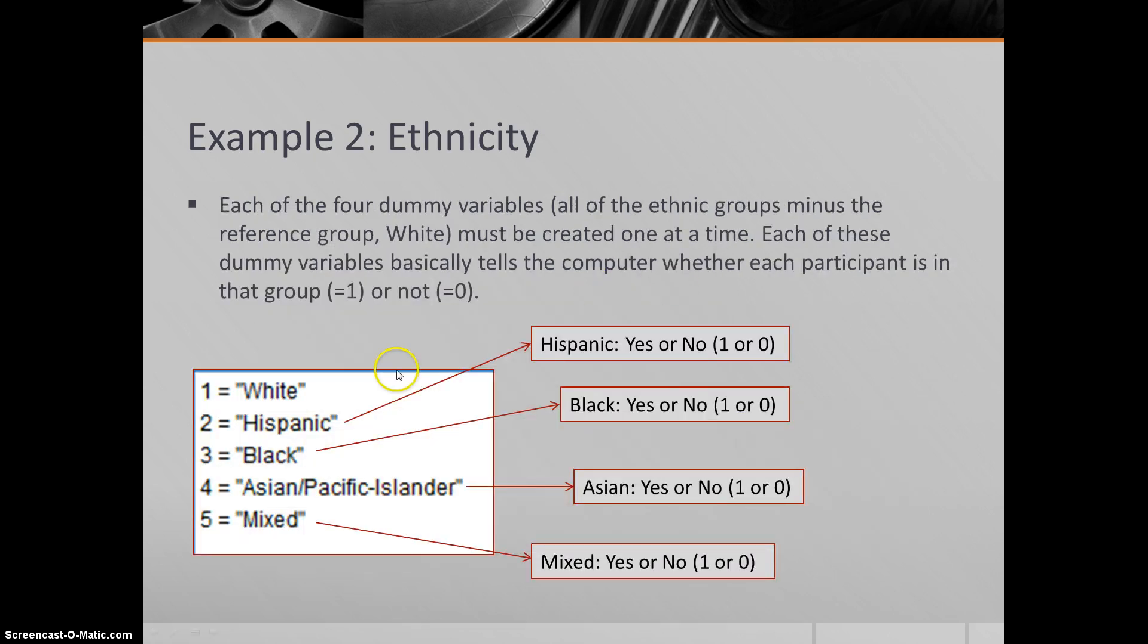Again, we have five groups, four new dummy variables. For each one of these, we're going to tell the computer whether each participant is in that group or not. Our first dummy variable will tell the computer whether the individual is Hispanic or not. If they are, they get a 1. If they're not, they get a 0. Next one tells the computer whether the participant is black or not—yes or no, 1 or 0—and so forth.